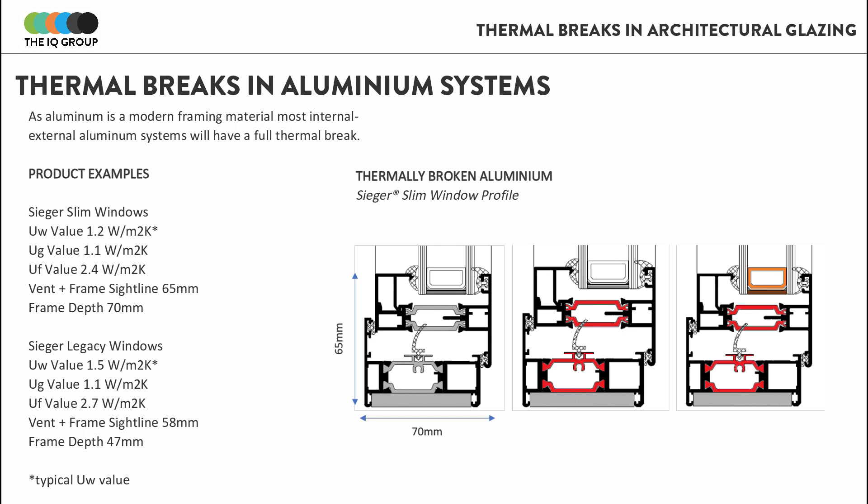It has an overall depth of 70 millimetres and a vent-plus framing profile of 65 millimetres — very slim for an aluminium system. You can see from the U value breakdown how the UG value and the UF value come together to offer a typical UW value of approximately 1.2 W/m²K.